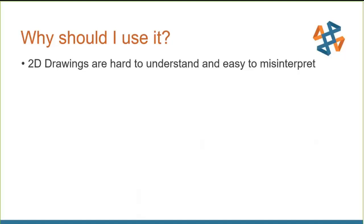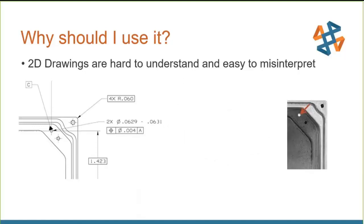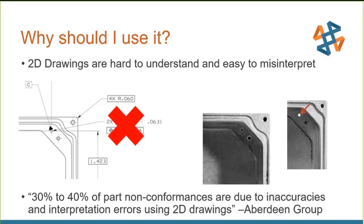Why do we need MBD? One big reason is that 2D drawings can be hard to understand and easy to misinterpret. For example, looking at a relatively simple 2D drawing and the part manufactured from it, there's a hole that should have been blind but was made through — due to a miscommunication in the drawing. If the customer had been using MBD, the manufacturer could have rotated the part, seen it was not a through hole, and this might have been avoided. This problem has been quantified by the Aberdeen Group, a tech consulting firm out of Boston: 30 to 40 percent of part non-conformances are due to inaccuracies and interpretation errors using 2D drawings.